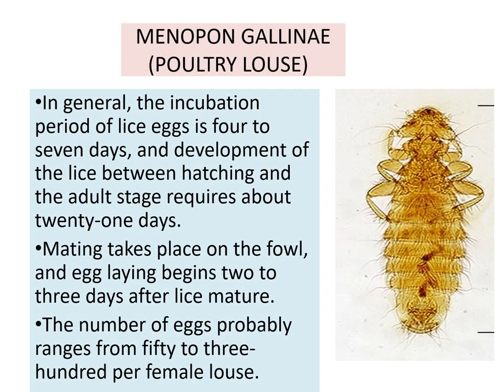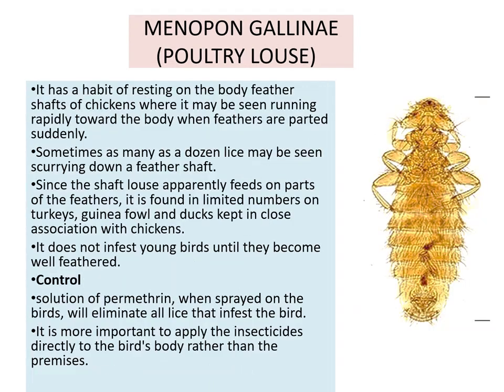Mating takes place on the fowl and egg laying begins 2 to 3 days after mating. The louse has a habit of resting on the body feather shafts of chicken, where it may be seen running rapidly towards the body when the feathers are parted suddenly. Sometimes as many as a dozen lice may be seen scurrying down a feather shaft. Since the shaft louse apparently feeds on parts of the feathers, it is found in limited numbers on turkeys, guinea fowl and duck kept in close association with chicken. It does not infest young birds until they become well feathered.